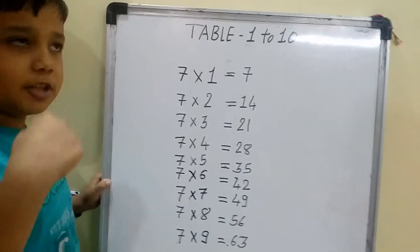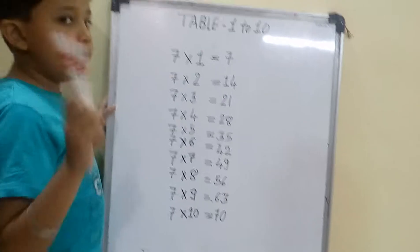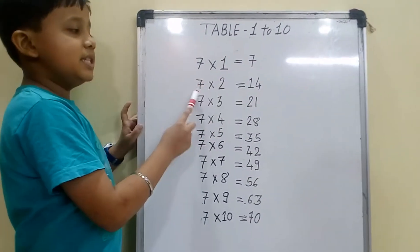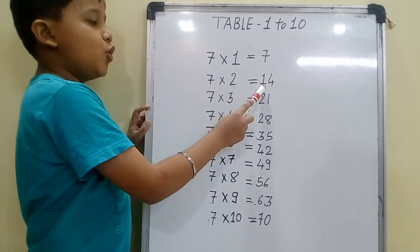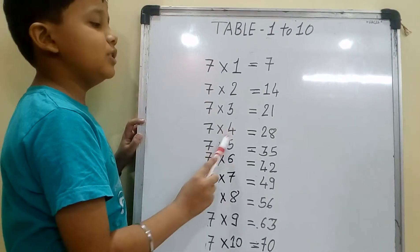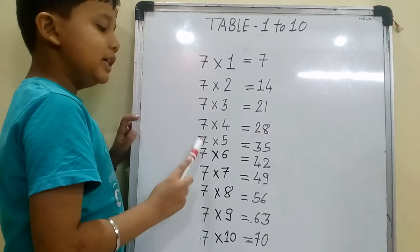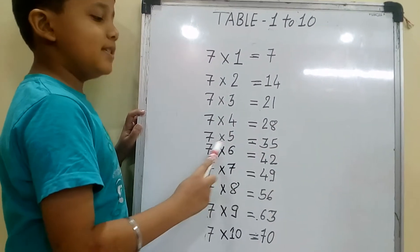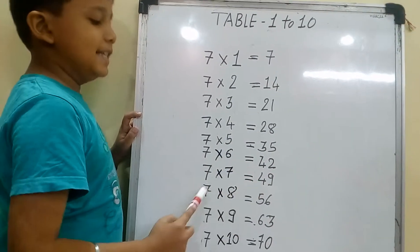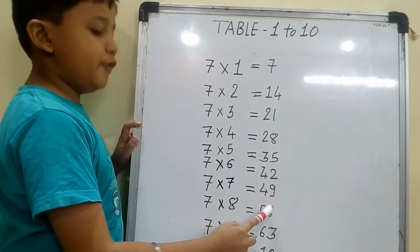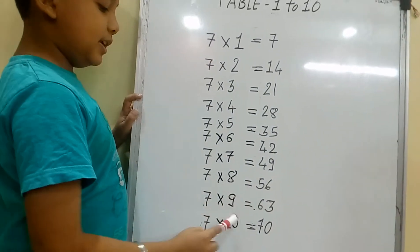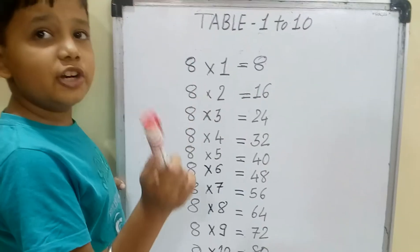Now children, you repeat with me. The table of 7. 7 one is 7, 7 two is 14, 7 three is 21, 7 four is 28, 7 five is 35, 7 six is 42, 7 seven is 49, 7 eight is 56, 7 nine is 63, 7 ten is 70.